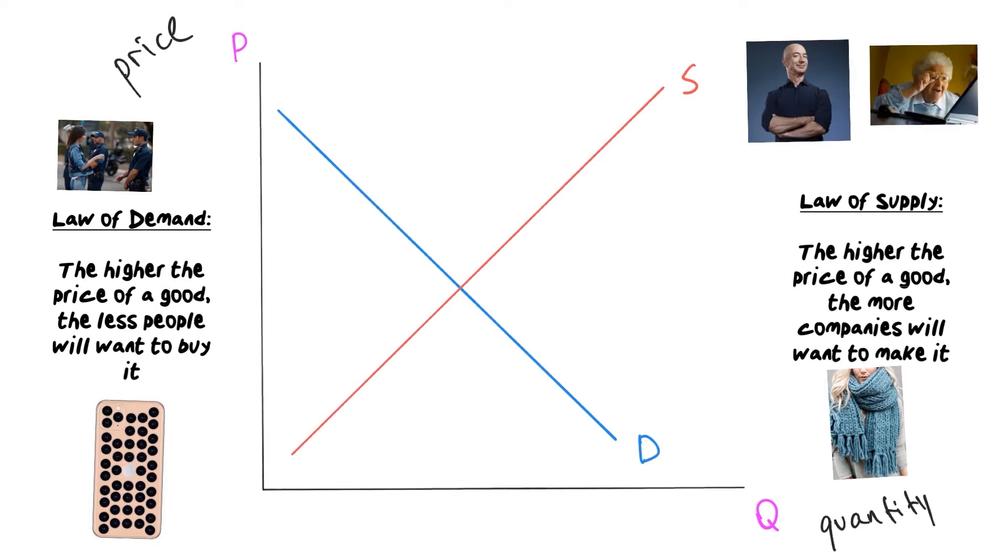So these laws determine how the interactions between producers, the sellers, and consumers, the buyers, determine the price and the production quantity of certain goods or services.